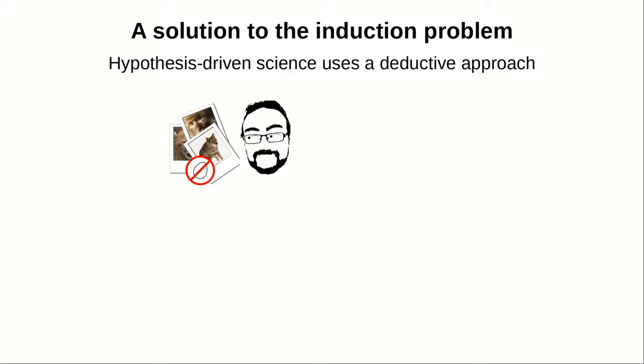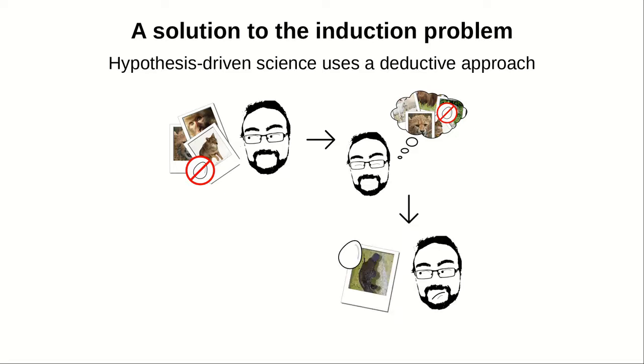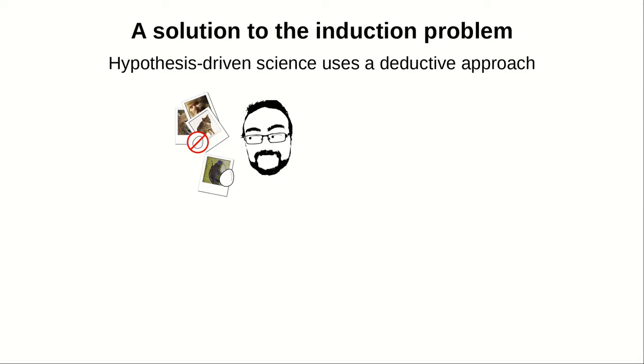So what is the solution to induction? Well, it's the so-called hypothesis-driven science, or deductive science. Let's suppose you start with a hypothesis: mammals do not lay eggs. And then you observe the platypus laying eggs, so your hypothesis is not valid anymore. But that's fine.